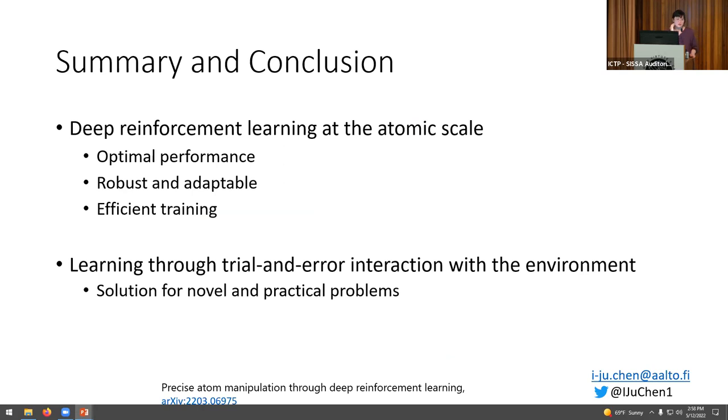So in summary, we showed that yes, deep reinforcement learning agent is able to learn to manipulate atoms and it's able to do it with optimal precision and against changes in the environment. And the training duration and the amount of data it required was reasonable.